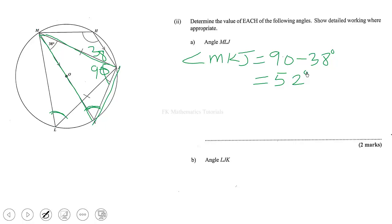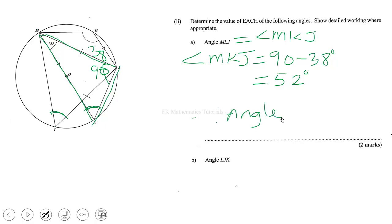But angle MLJ is equal to angle MKJ, because they are in the same segment. Therefore, angle MLJ is also equal to 52 degrees.